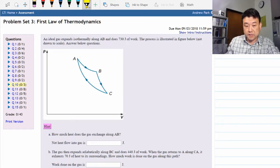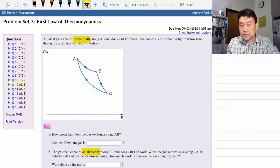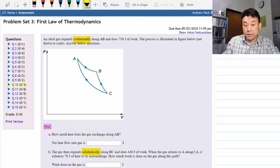It says an ideal gas expands isothermally along AB and does some amount of work. Then after part A from B to C it says that the gas then expands adiabatically along BC and does some work. These are the two keywords that make this problem a lot easier than it might appear at first.